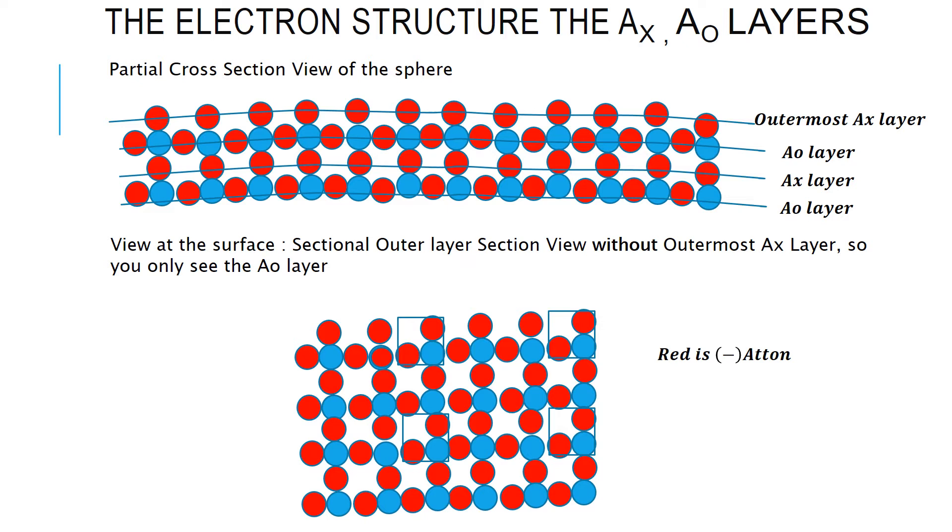Then the AX layer, which is just negative add-ons and so forth. So, you have AX, A0, AX, A0, AX, and so forth and so on. The next picture is actually when you're looking at the surface without the AX layers. In this case, the positive add-on is exposed.